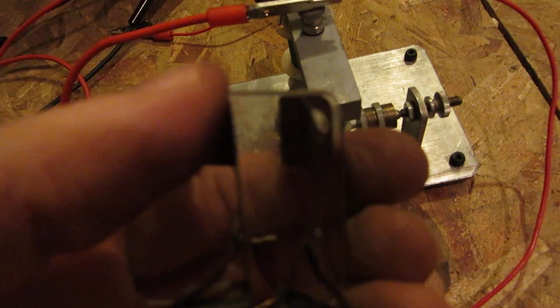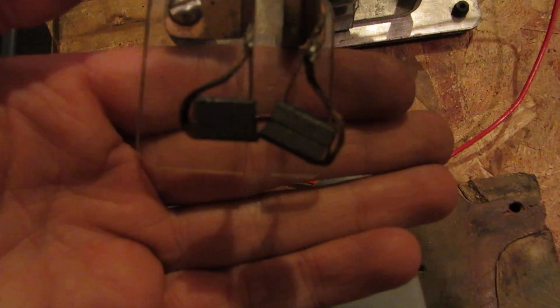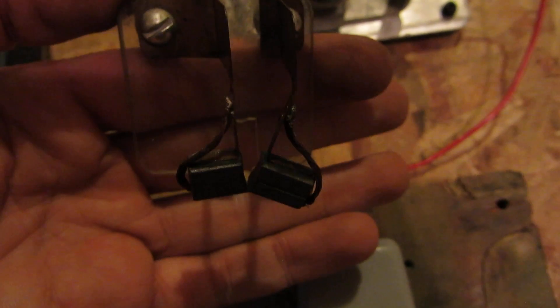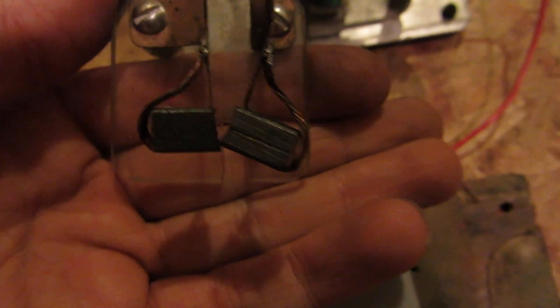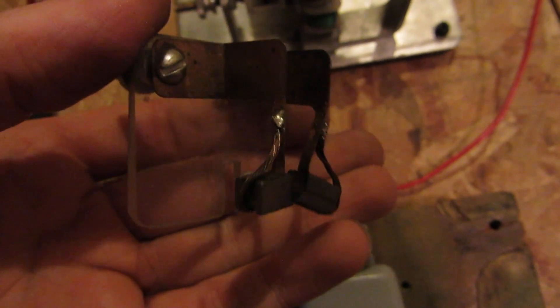So I kept the original copper so-called brushes. I put a 90 degree angle on both of them and just basically super glued each carbon brush to it and then soldered the wire directly to the copper.